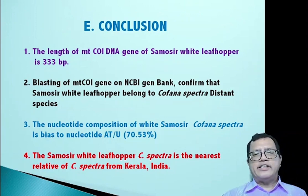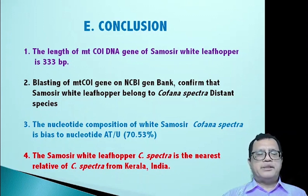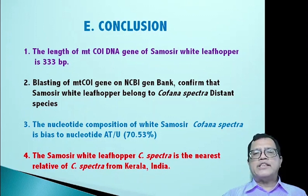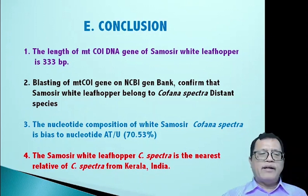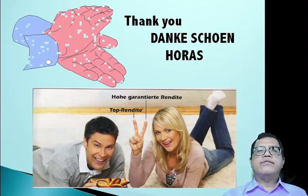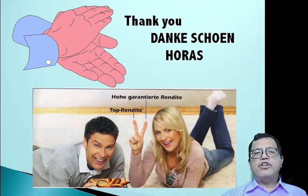The conclusions of our investigation are: first, the length of MTC01 DNA gene of Samosir white leafhopper is 333 base pairs; second, based on blasting of the MTC01 gene on NCBI GenBank, it is confirmed that the white leafhopper of Samosir Island belongs to the species Copana Spectra distans; third, the nucleotide composition is biased toward nucleotides Adenine-Thymine or Uracil; and last, the Samosir white leafhopper Copana Spectra is the nearest relative of Copana Spectra from Kerala, India. Thank you for your attention.